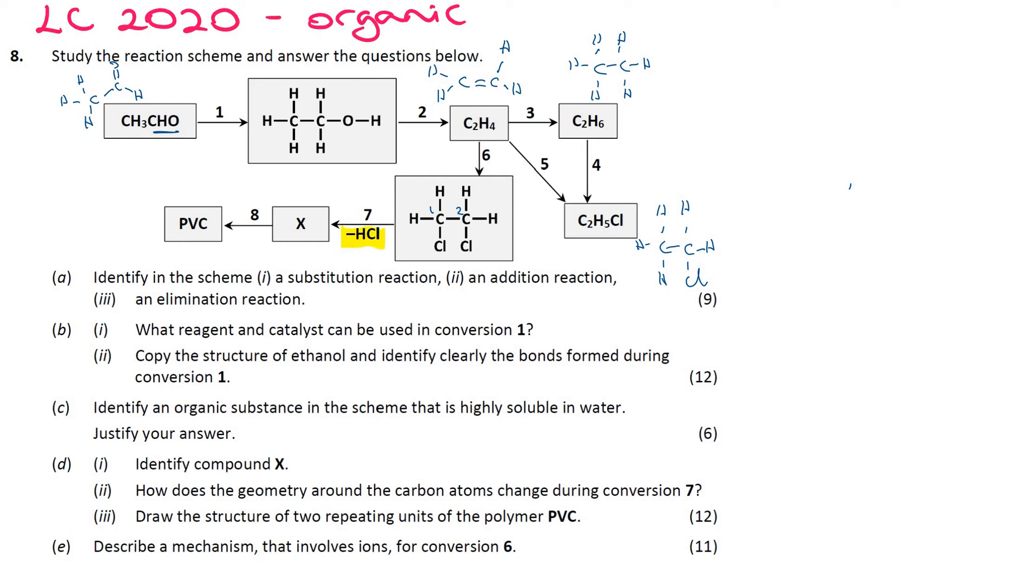And that undergoes some sort of elimination reaction because you're losing HCl there to form a product. And if you're losing HCl from this molecule, it's quite likely that you're losing one hydrogen on one carbon and a chlorine off the other carbon. So, in that elimination reaction, you're actually making this product, the alkene, which is chloroethene. And then you can polymerize that. So, you wouldn't have to draw it out, but just have an idea of what's going on before rushing into the questions.